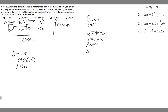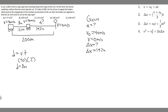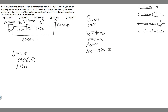Now that we have delta x, which is 192 meters, we can go ahead and solve for a, because we have three variables: v, v₀, and delta x. We're going to use one of the kinematic equations. The first three all have time, and we don't know how long the braking is going to take, so we don't want to use those. We can use the equation v² = v₀² + 2a·Δx, because we have v₀, v, and delta x.